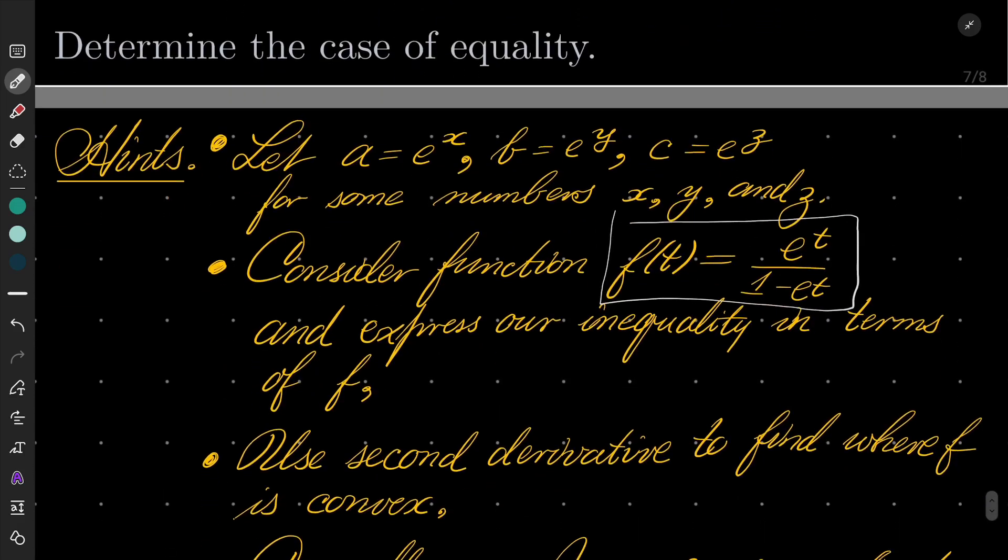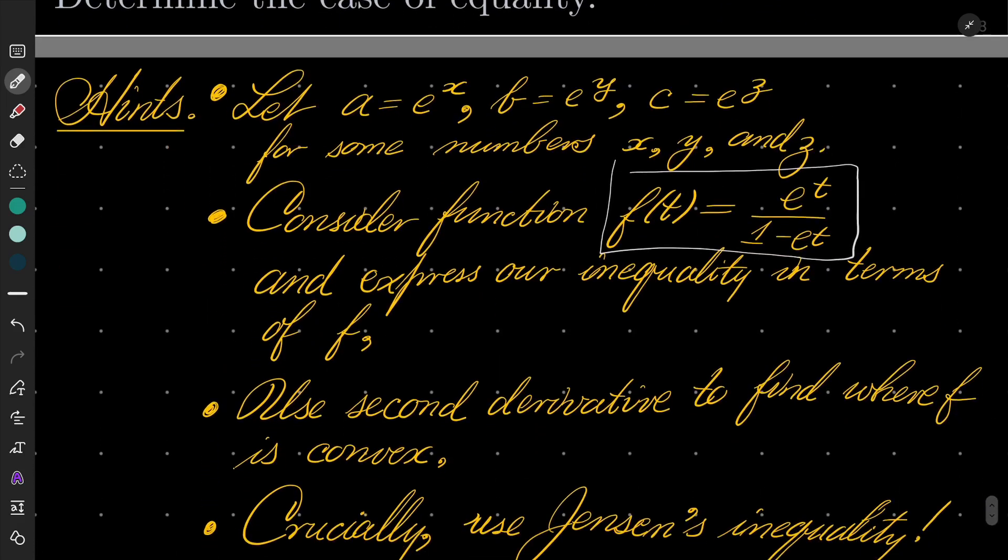Then use the second derivative to establish where our function is convex and crucially, it will be obvious if you recognize it, use Jensen's inequality. It will be pretty clear that we want to use Jensen's inequality once we express our inequality in terms of function f. We'll give this problem a try and I will see you in a minute.